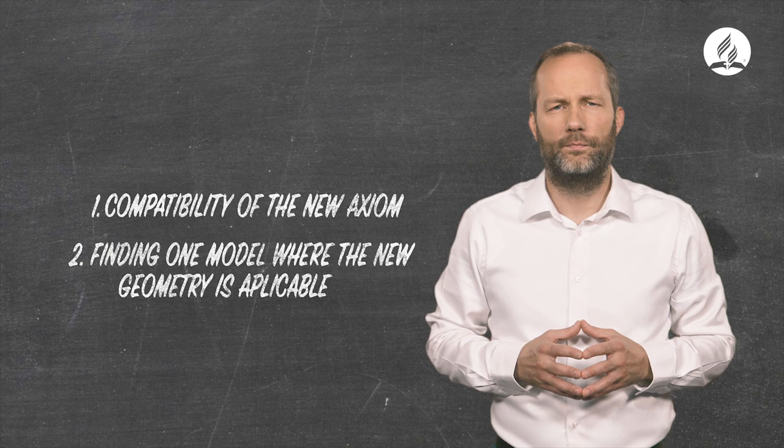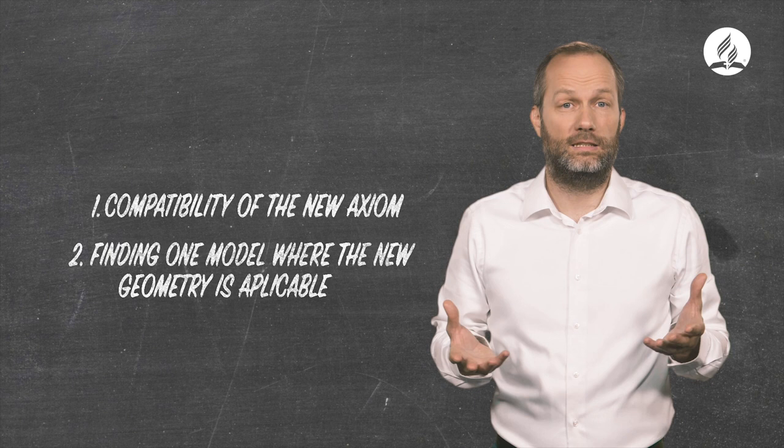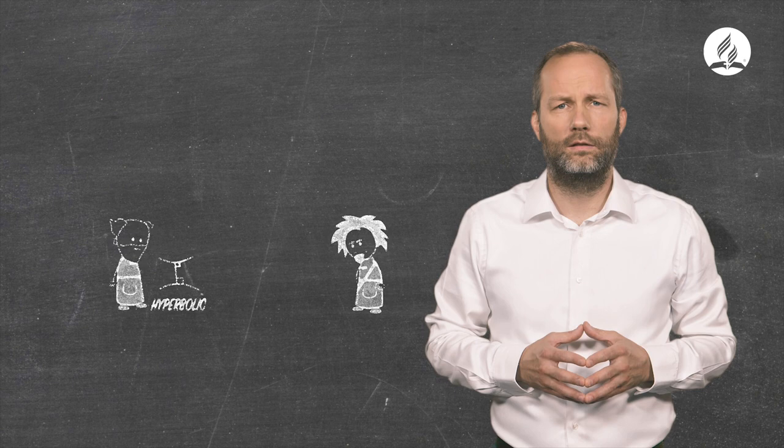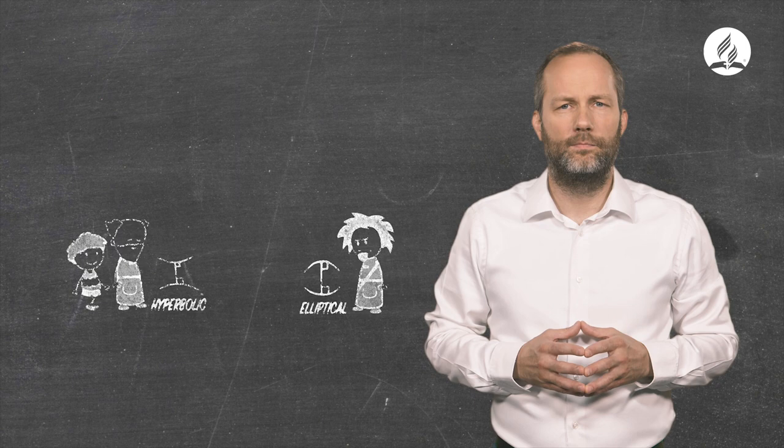In other words, all right, interesting theory, but does it have any use? Thus, two non-Euclidean models of geometry were born. The hyperbolic, an infinite number of parallels can be drawn, and the elliptical, there are no parallel lines.